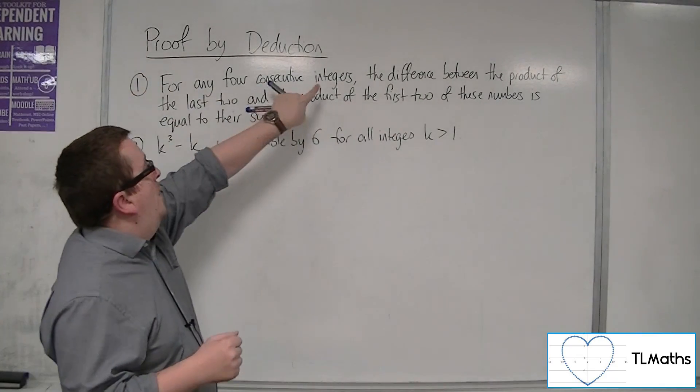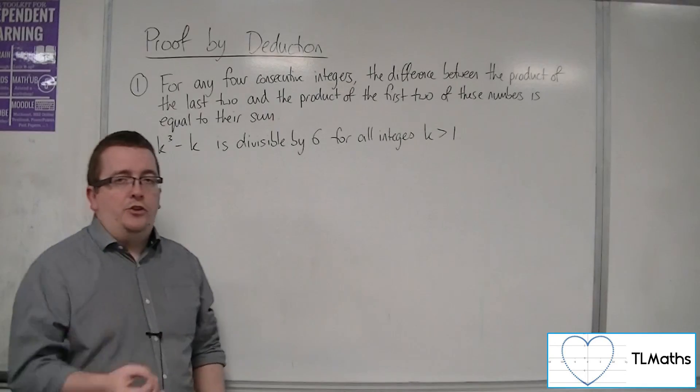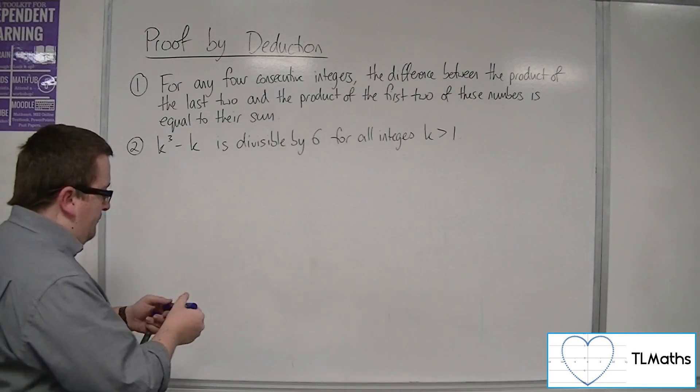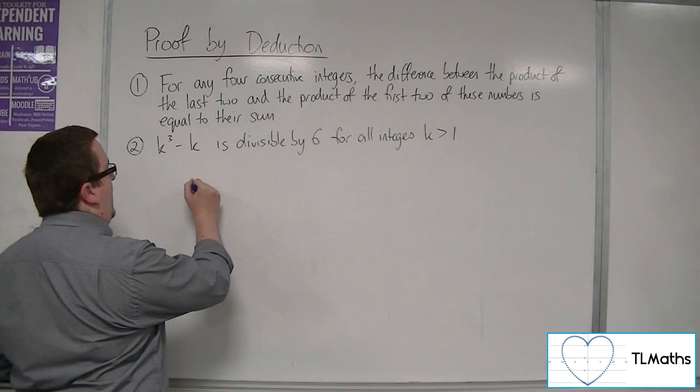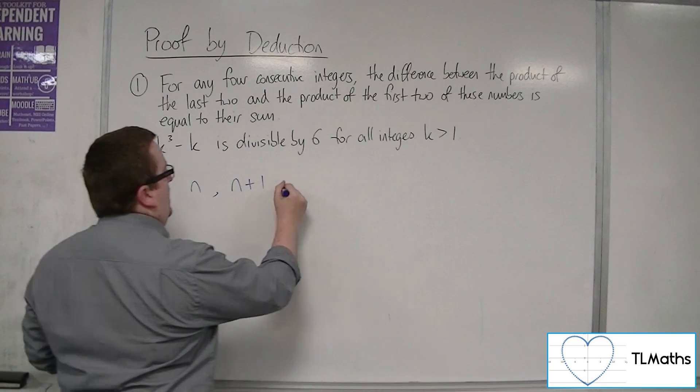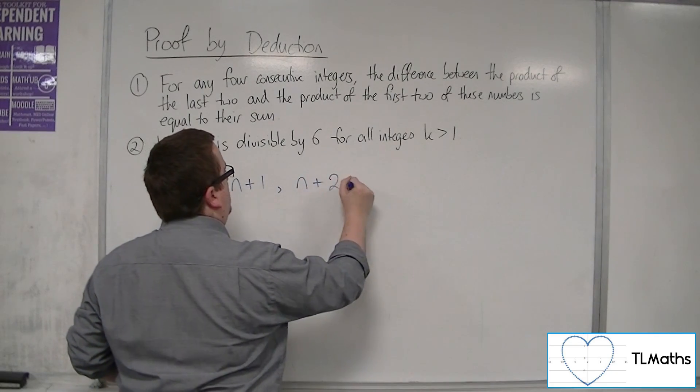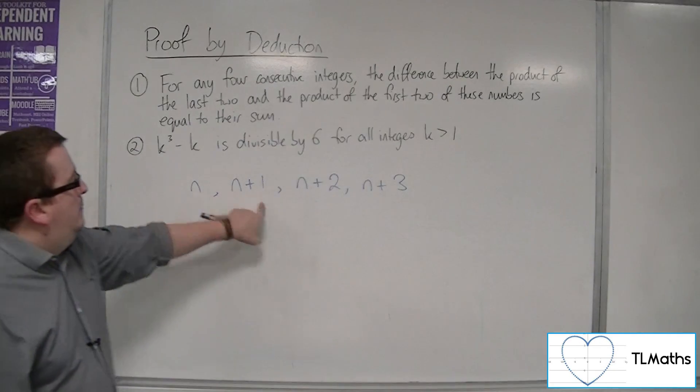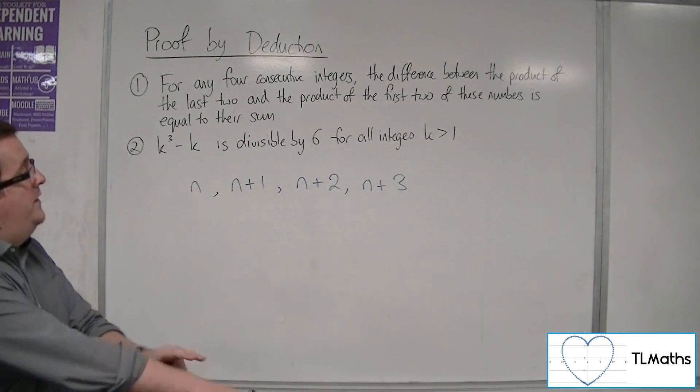For any four consecutive integers, okay, so let's label them. Let's call the first one n, and the second one n+1, and the third one n+2, and the fourth one n+3. So here are my four consecutive integers.